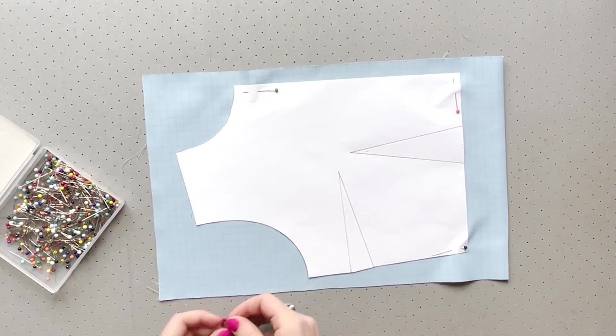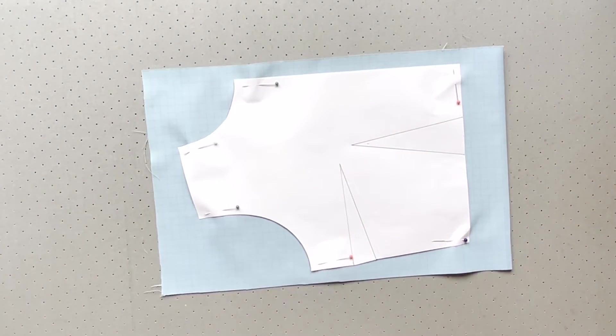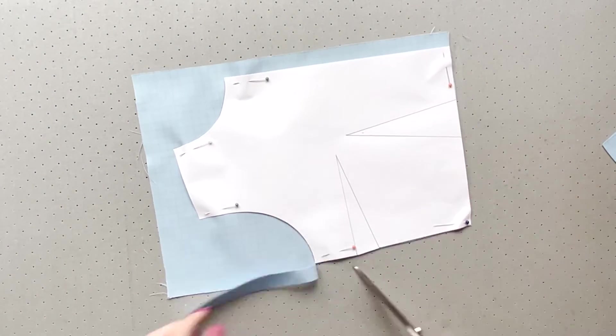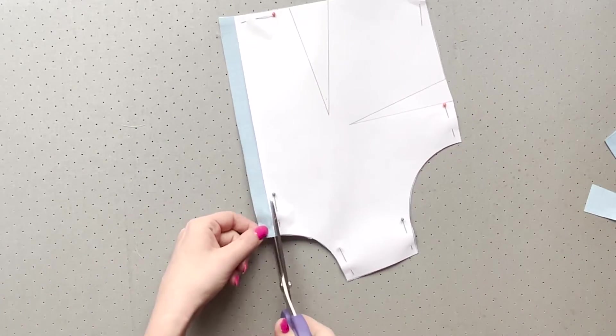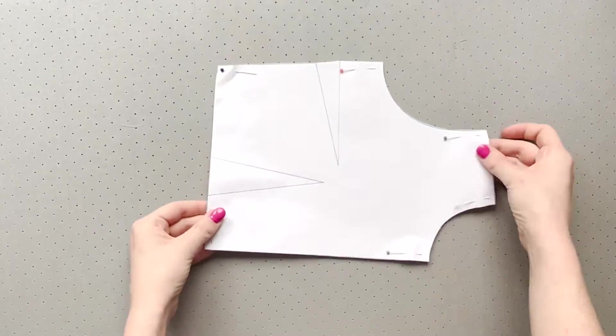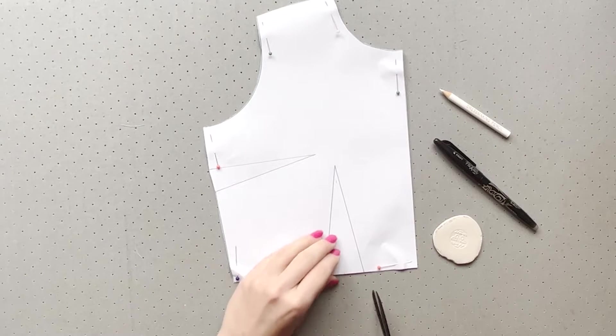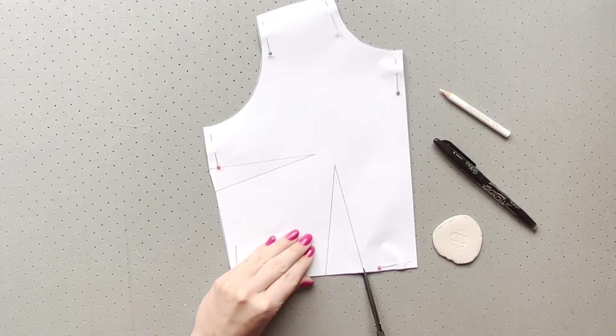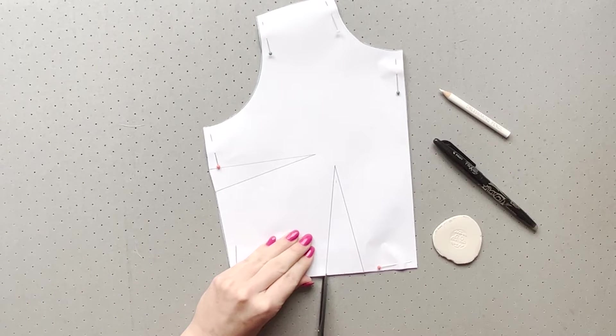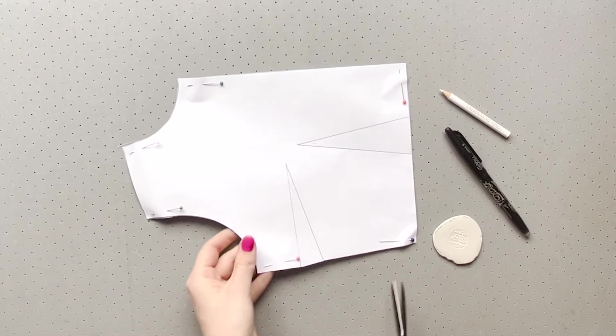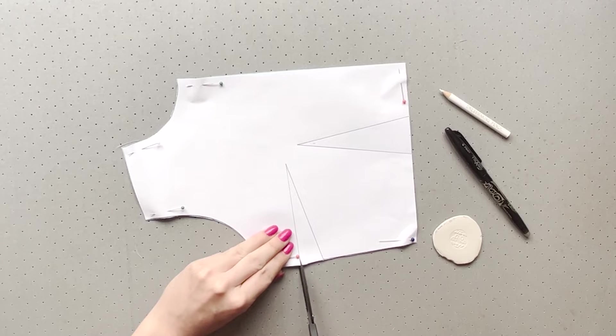For a dart you'll only need to mark the dart tip and the point the dart legs hit the edge. So what you end up with is a dot in the middle of your fabric and then two notches. From that point you can add in more detailed markings if you want. For all these methods you will begin by snipping the legs at the edge of your fabric. This is the same as a notch and a small snip of about five millimeters or less. Make sure you stay within your seam allowance.